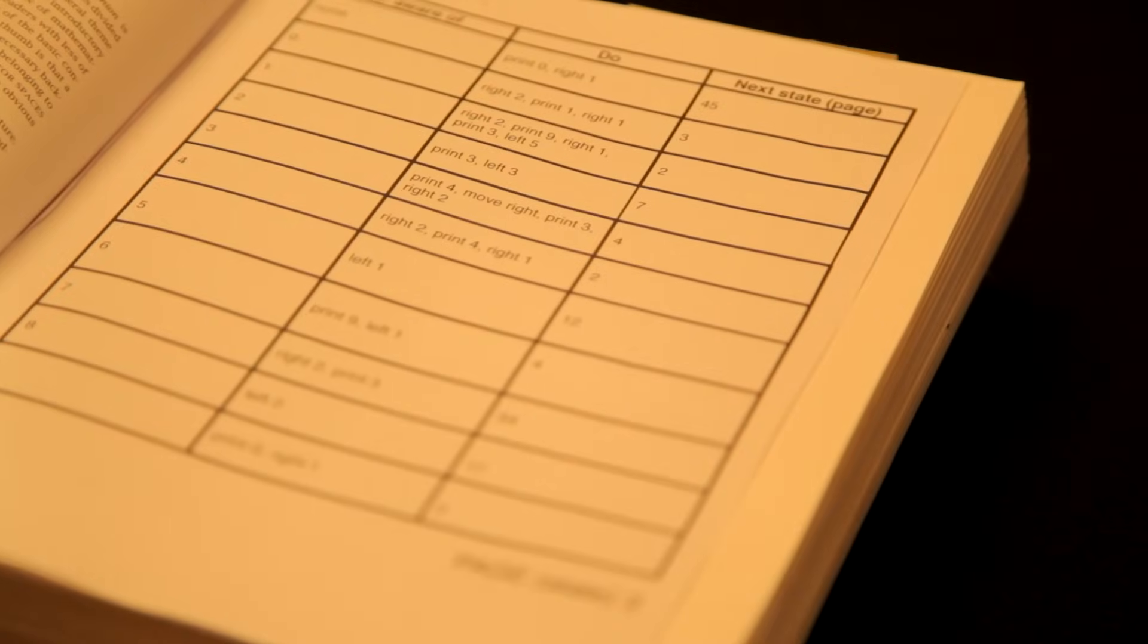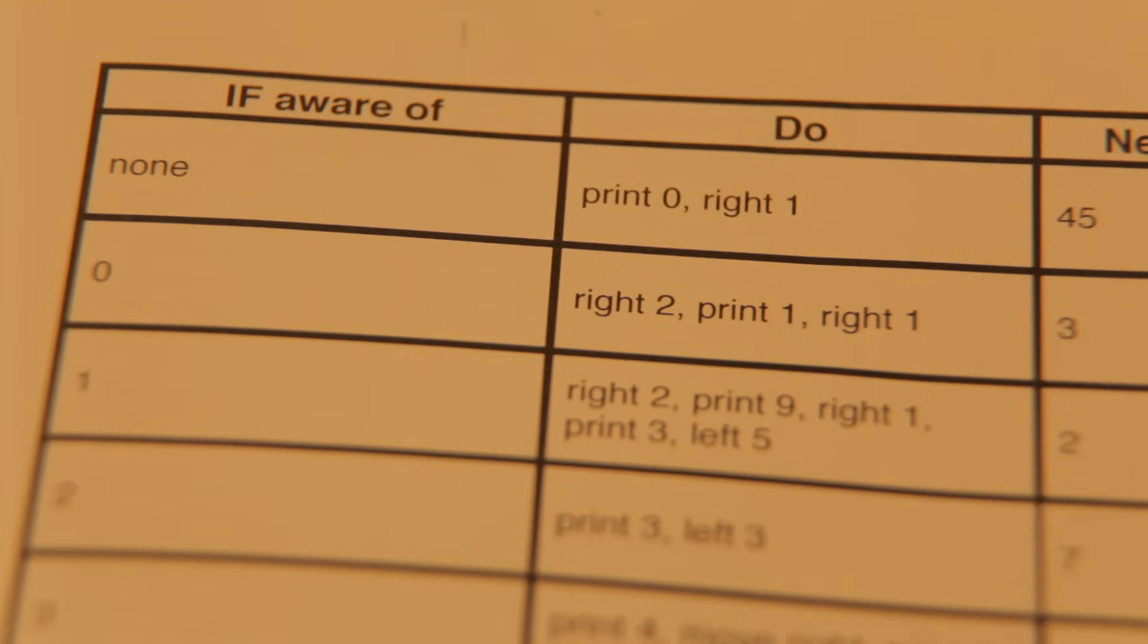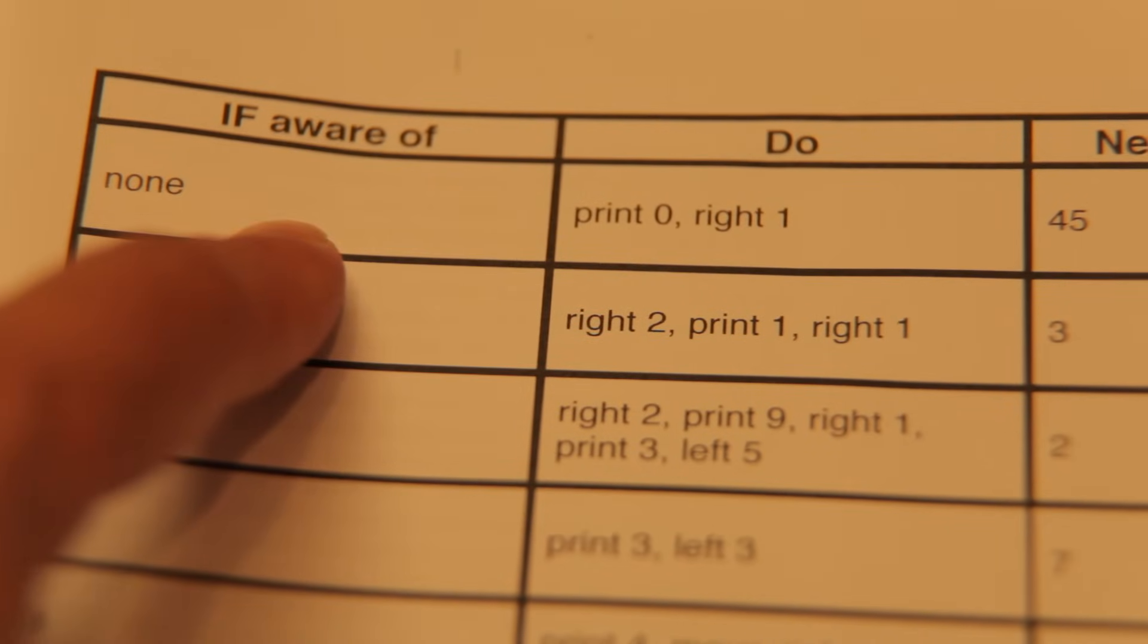Think of each page in this book of instructions as a single decision. First comes an observation, which is the if half of the conditional statement.